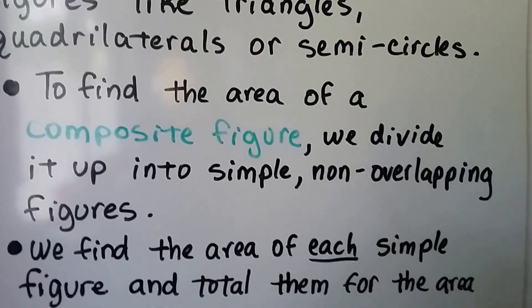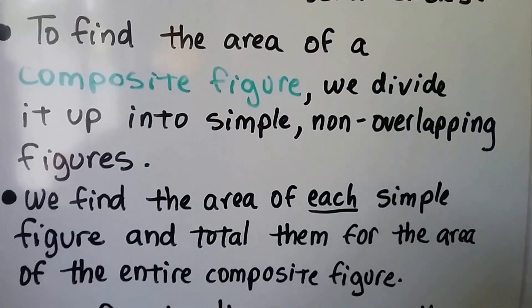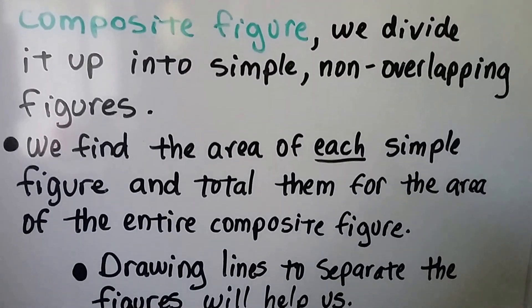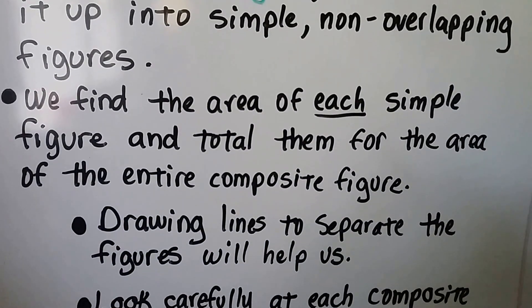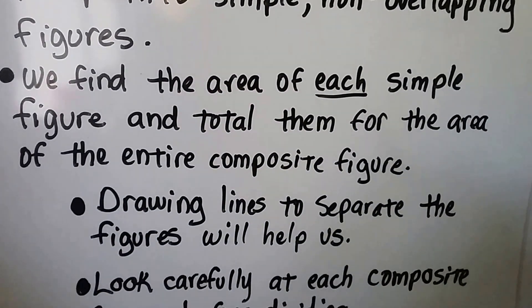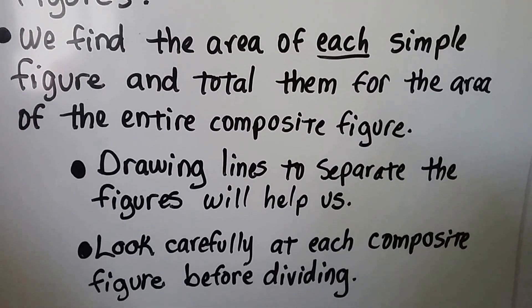To find the area of a composite figure, we divide it up into simple non-overlapping figures. We find the area of each simple figure and total them for the area of the entire composite figure.